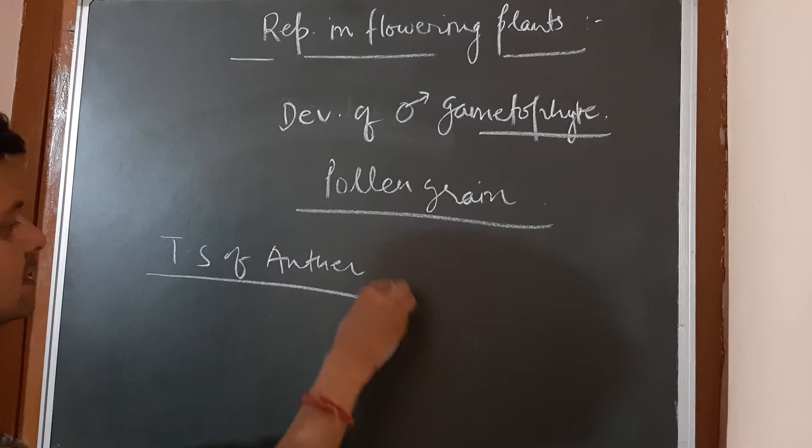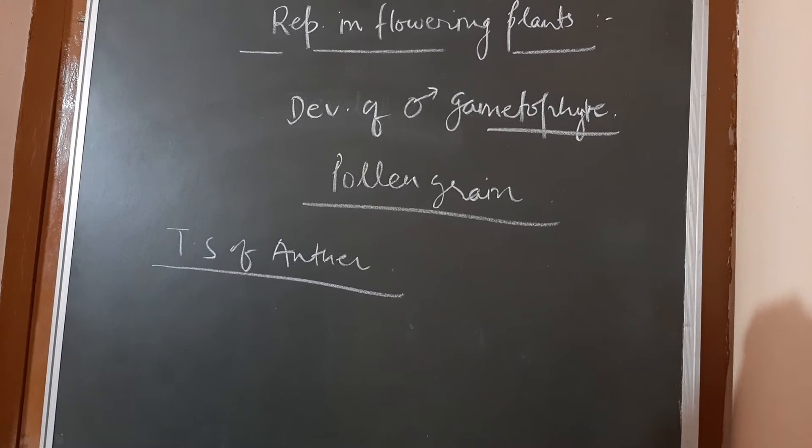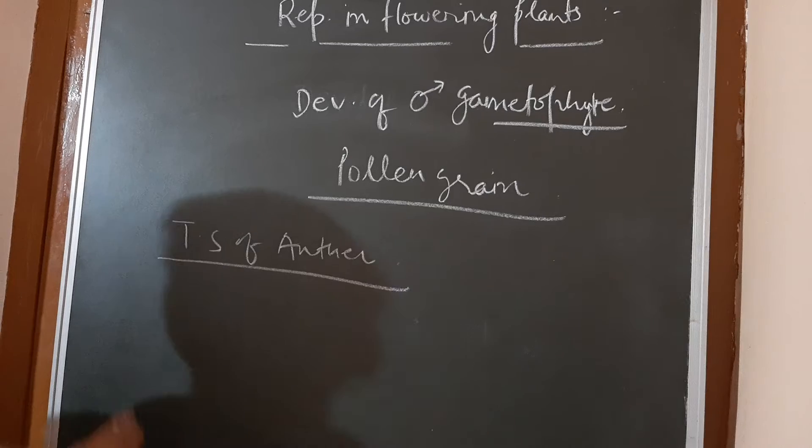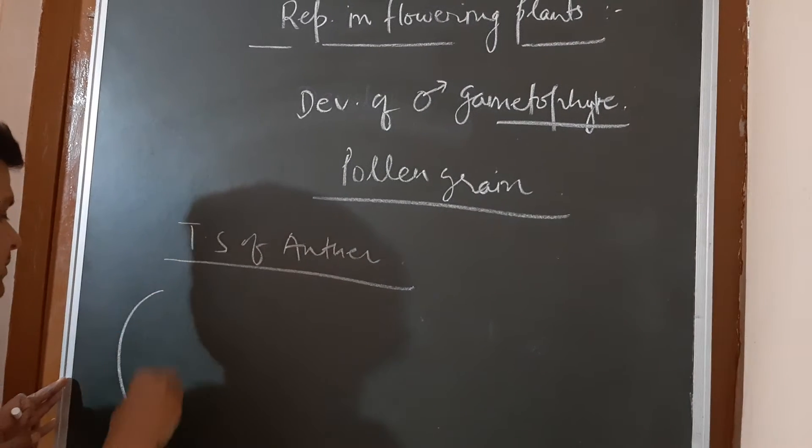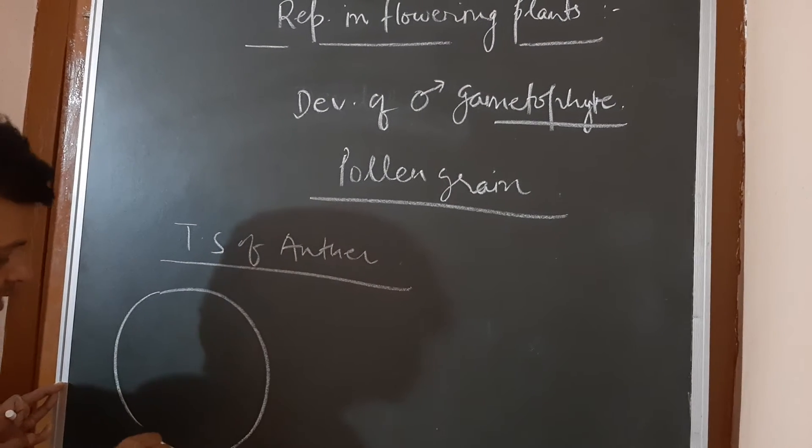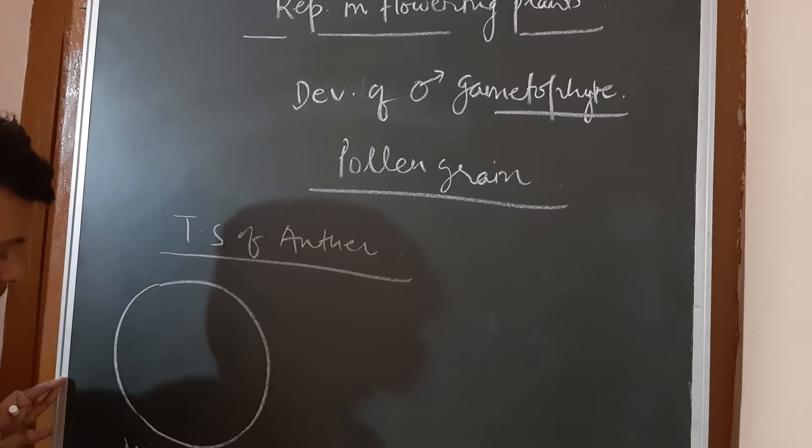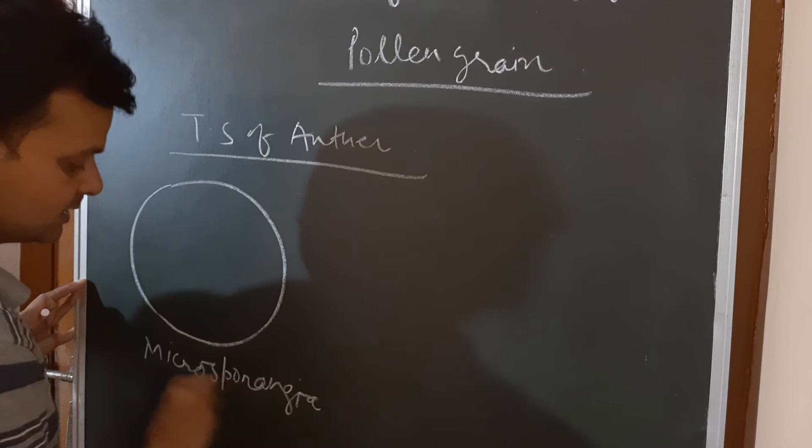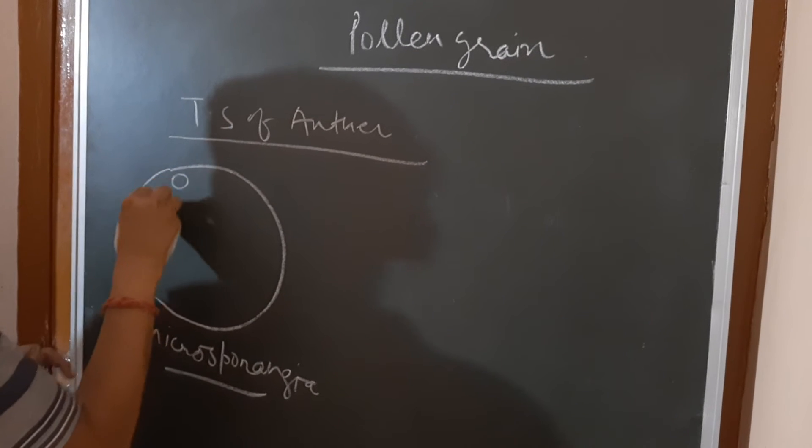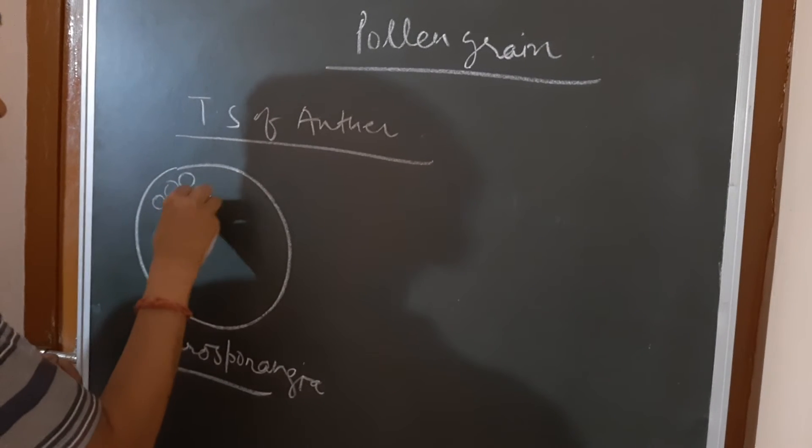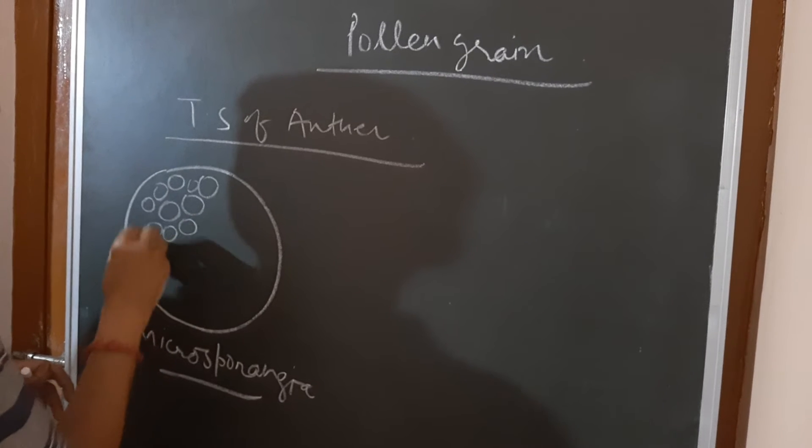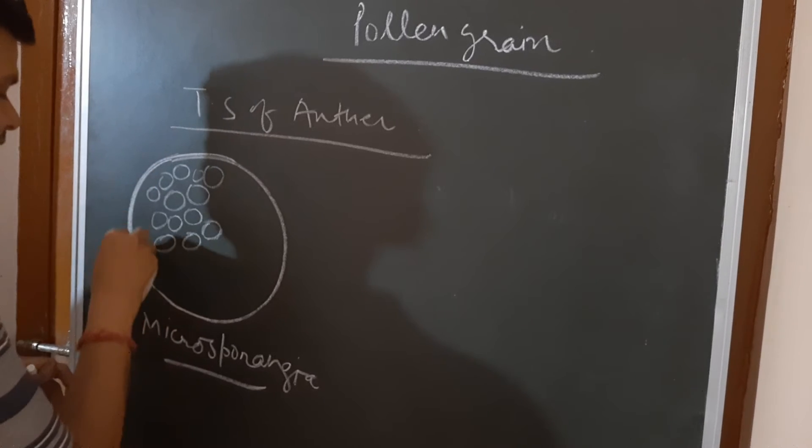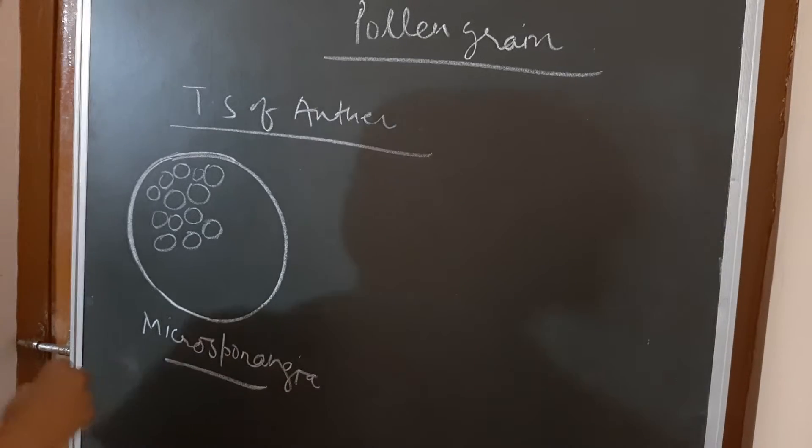Then you will be able to see the dithecous anther which we have discussed earlier. And then in the dithecous anther we have seen the four microsporangia. Inside the microsporangia, there are sporogenous tissues which are compactly arranged when the anther is immature. They are also known by the name archesporial cells. And there is a layer surrounding this microsporangia which is called as the tapetum, made up of pyramidal cells.